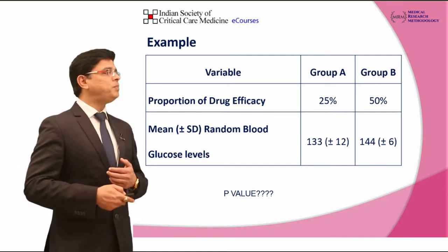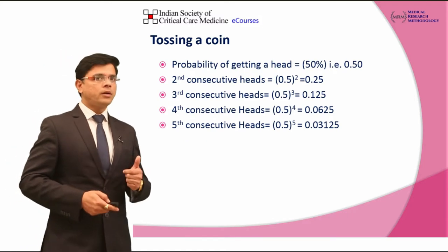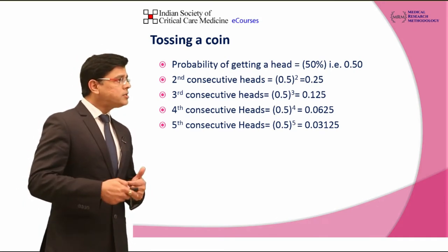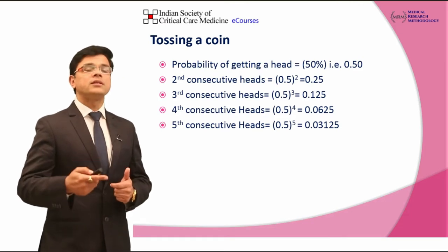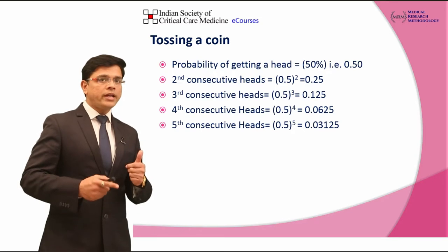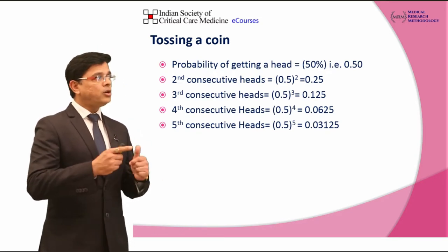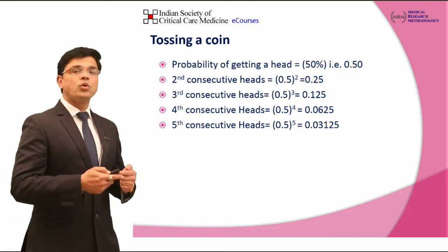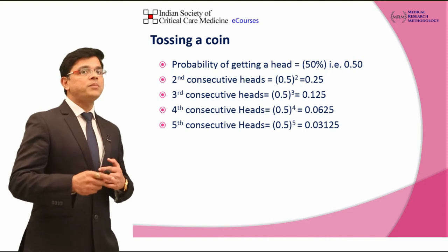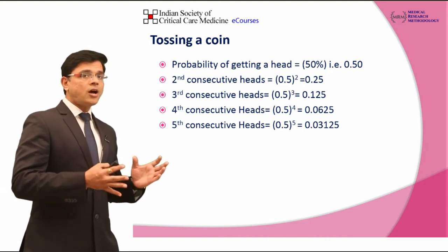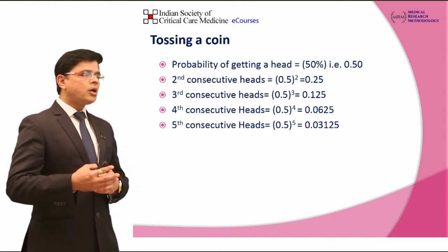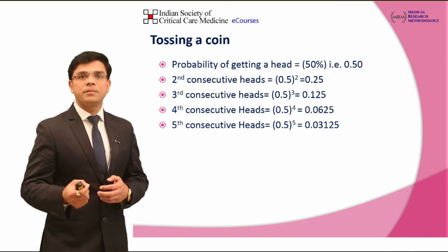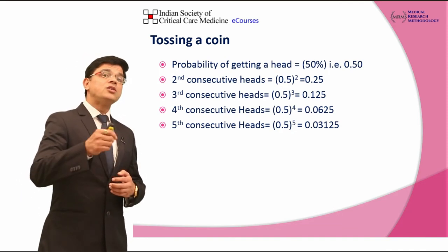So what is this P value? For example, if we toss a coin, the probability of getting a head is 50%, that is 0.5. The probability of getting two consecutive heads is 0.5 × 0.5 = 0.25, or 25%. For three consecutive heads it is 0.125, that is only 12.5%. The probability of getting four consecutive heads is only 6%, but still this 6% is not less than 0.05.